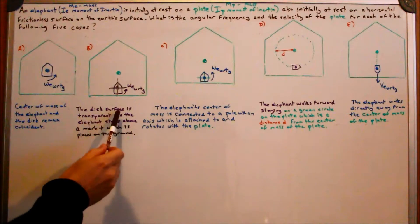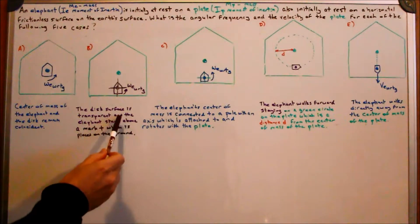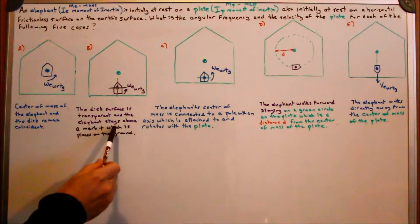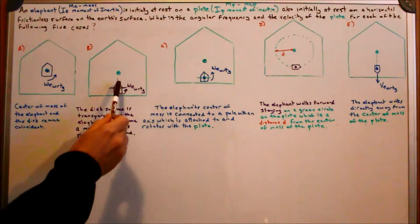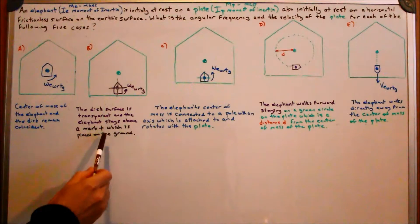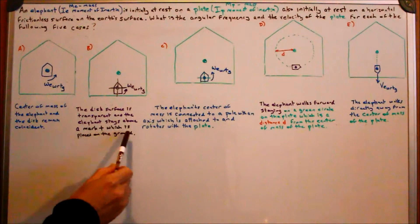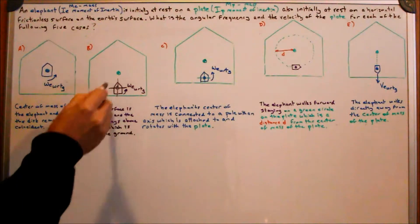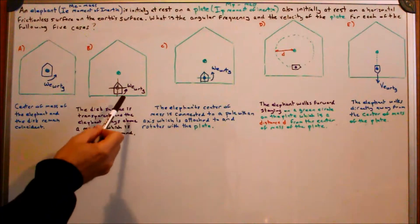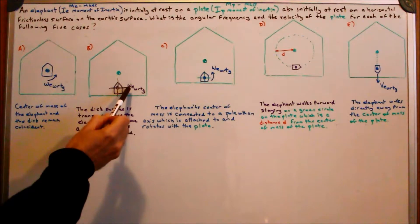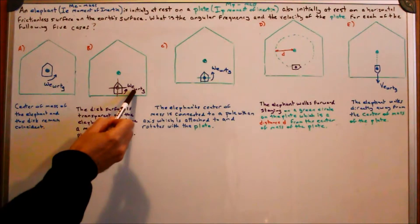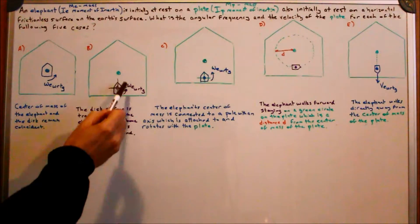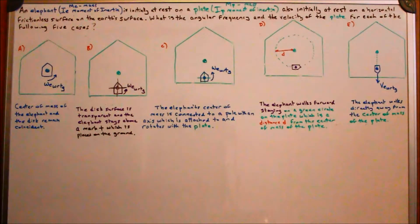Case B: the disc surface is transparent and the elephant stays above a mark — there's a cross placed on the ground. You can always see it and he stays above it, and he's also rotating with angular frequency with respect to the ground in the direction shown.